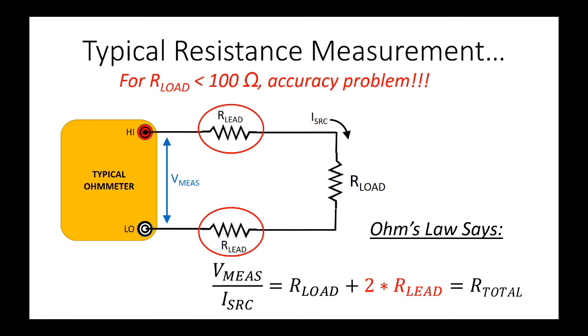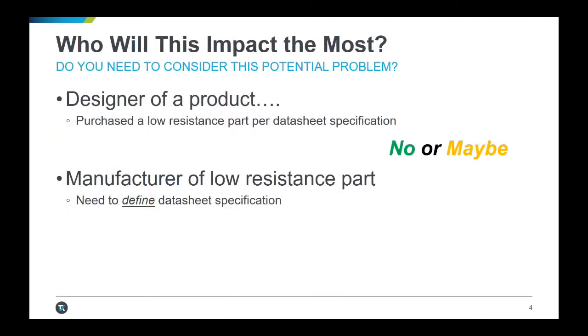If you are a designer of a product that uses a low resistance, this may not affect you. If you require a shunt resistor for your design, you simply select the part from a distributor that meets your needs, relying on the specifications provided. However, you may need to account for other low resistances in your design, such as the traces on your printed circuit board, which may contribute to performance inefficiencies.